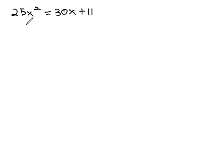So in this example, 25x squared equals 30x plus 11. The 25x squared is currently positive, so we're going to keep it over here on the left side, and we'll subtract 30x and subtract 11 from both sides.